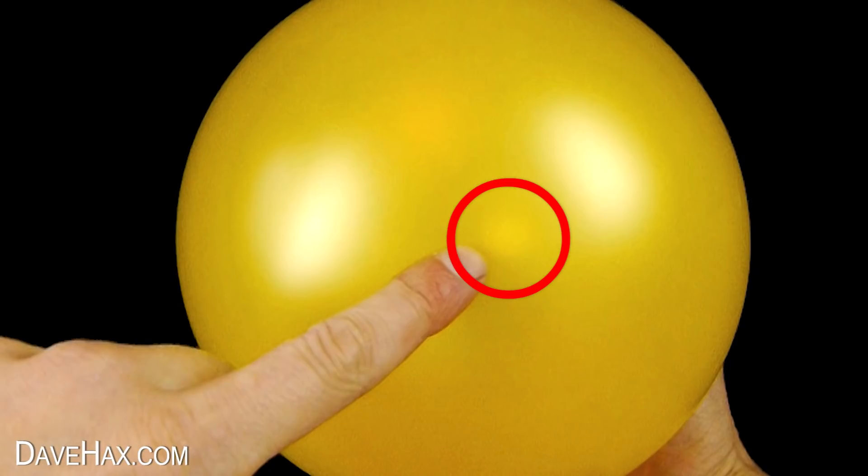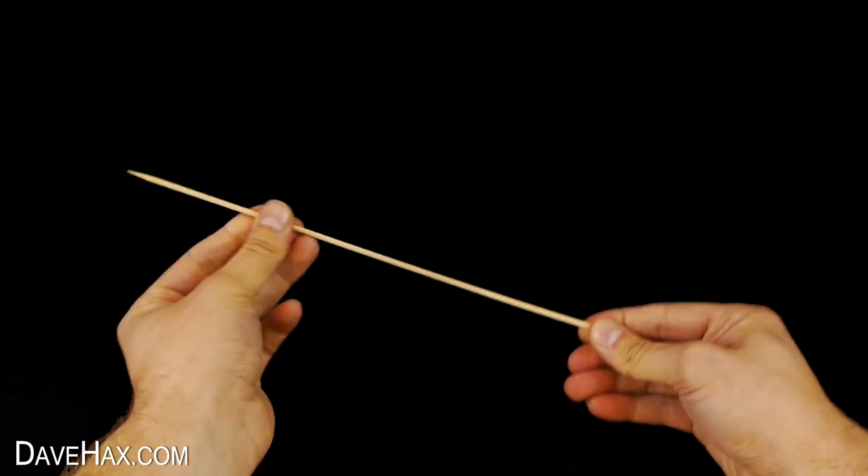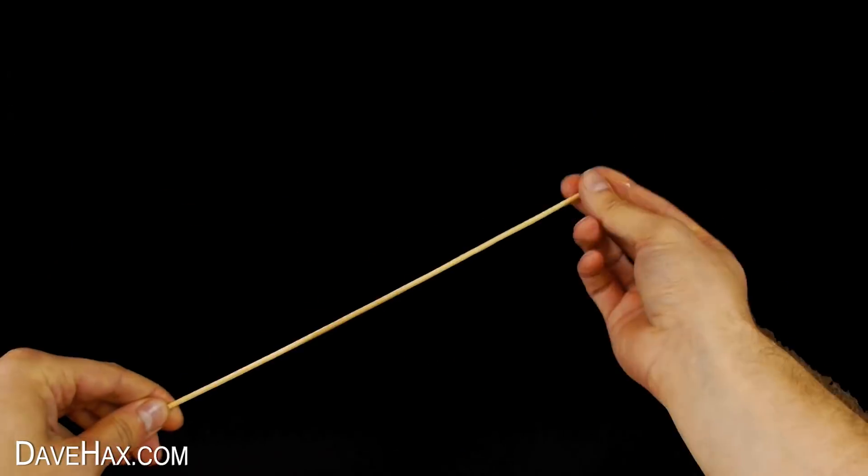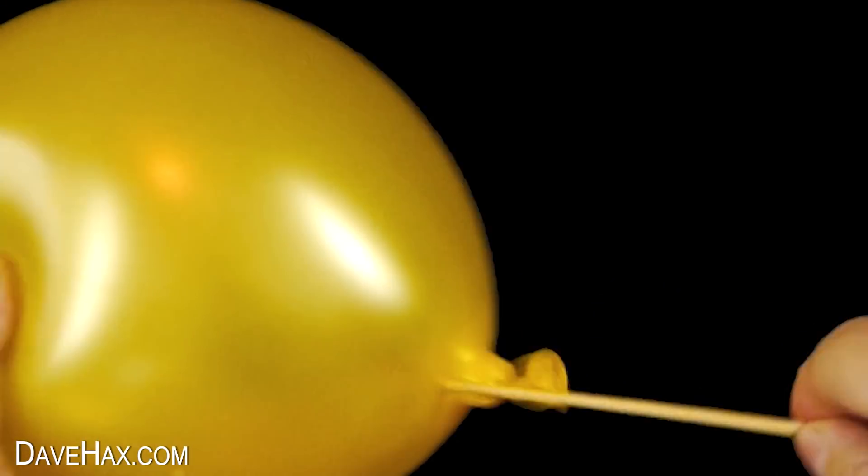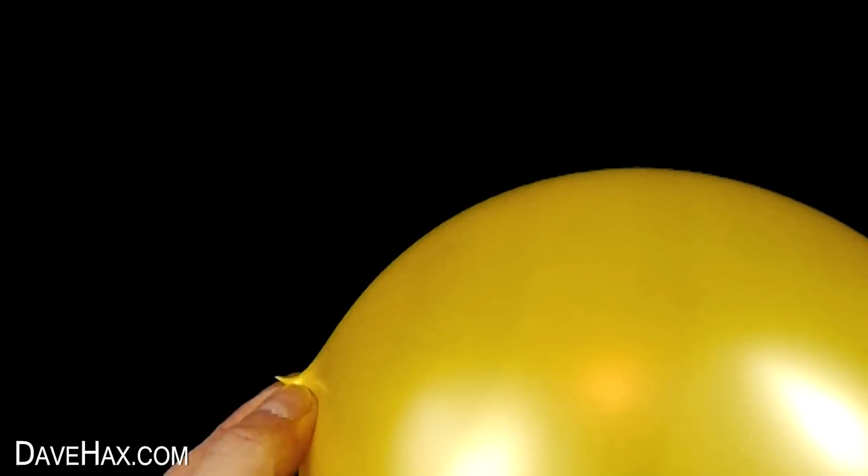And it's here we're going to be pushing our skewer through. So take a skewer, make sure it's nice and smooth with no rough edges, and coat it with a thin layer of washing up liquid. This will help lubricate it and seal it onto the balloon. You should now be able to push it into the bottom of the balloon without it popping.